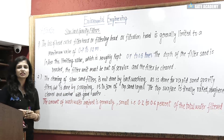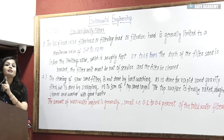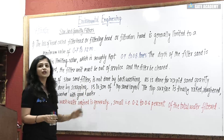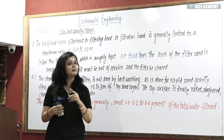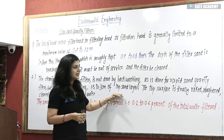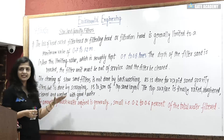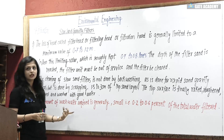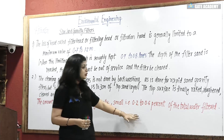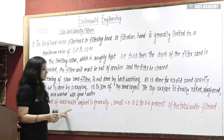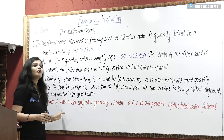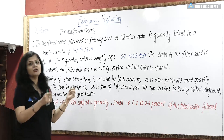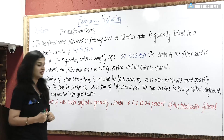The cleaning of the slow sand filter is not done by back washing, as is the case with rapid sand gravity filters. Instead, it is done by scraping the top 1.5 to 3 cm sand layer. We scrape the finer sand particles, rake them, then clean and wash with filtered water. The amount of wash water required is 0.2 to 0.6 percent of the total filtered water — much less than what is required for rapid sand filters.